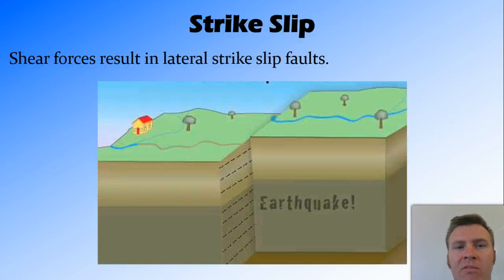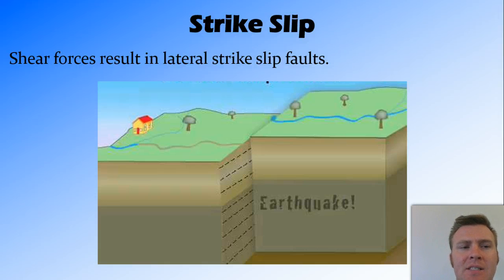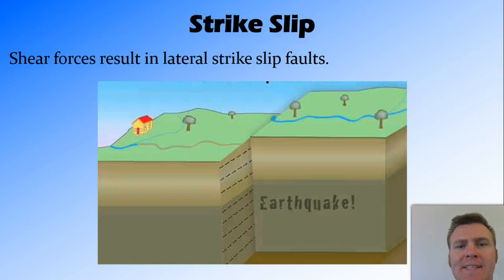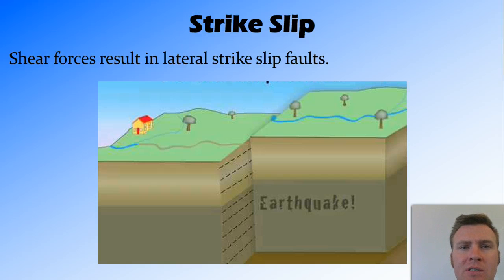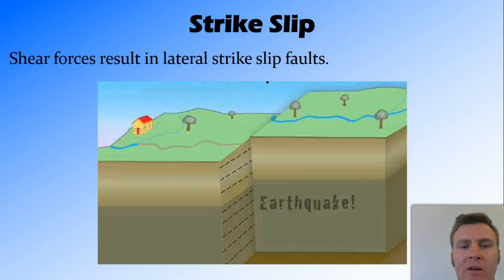The last type of fault is a lateral fault — a sideways fault. This is caused by shear forces and creates what's called a strike-slip fault. Rather than going up or down, the forces move the two strata of rocks sideways from each other.